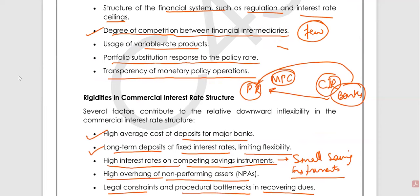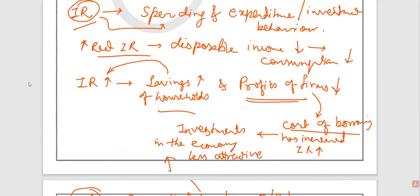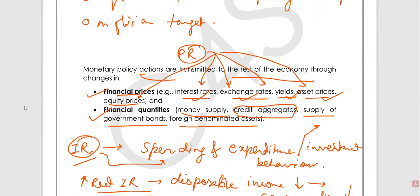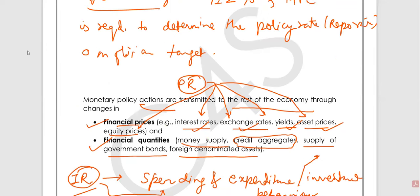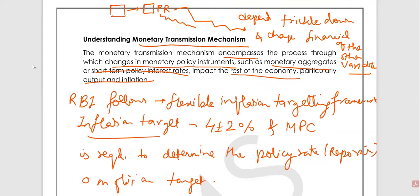So now we have discussed how monetary policy transmission is taking place in the economy and why, when changes in policy rates occur, it takes time in the changing of interest rates and other asset prices of the economy. That's all for today's session. Thank you and have a nice day.